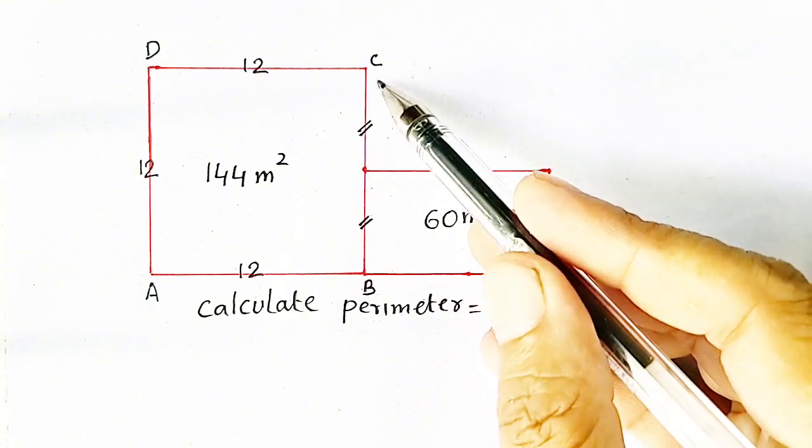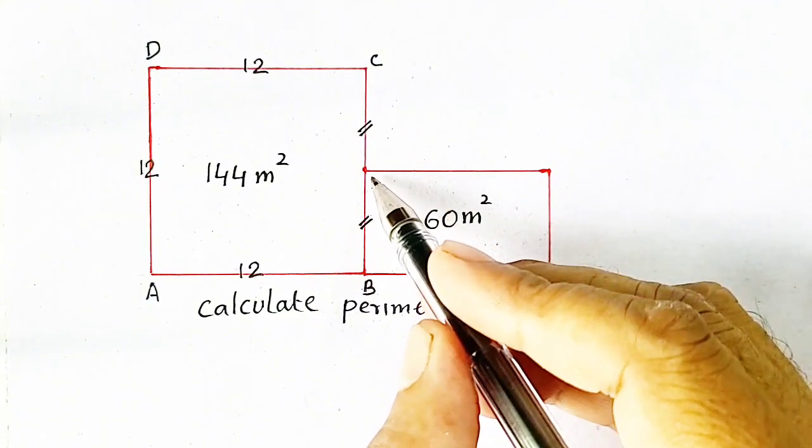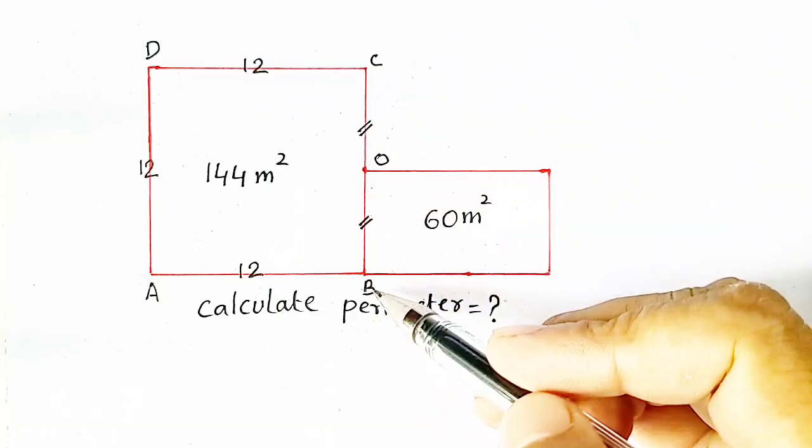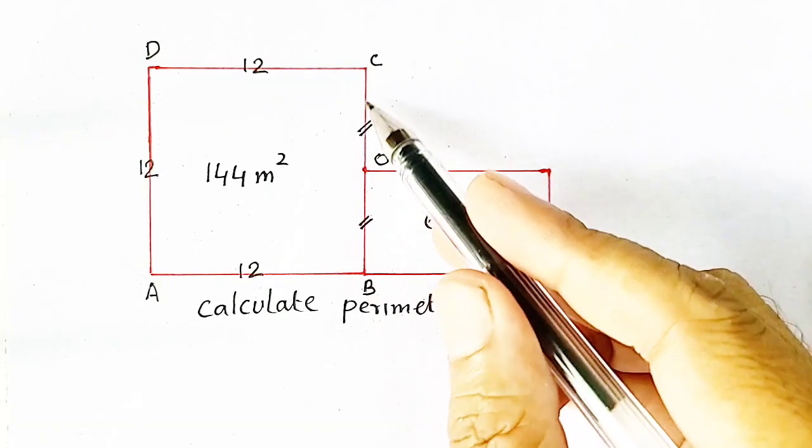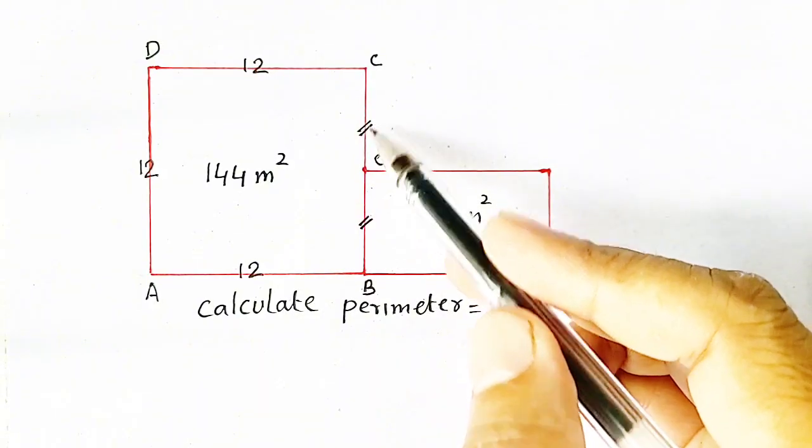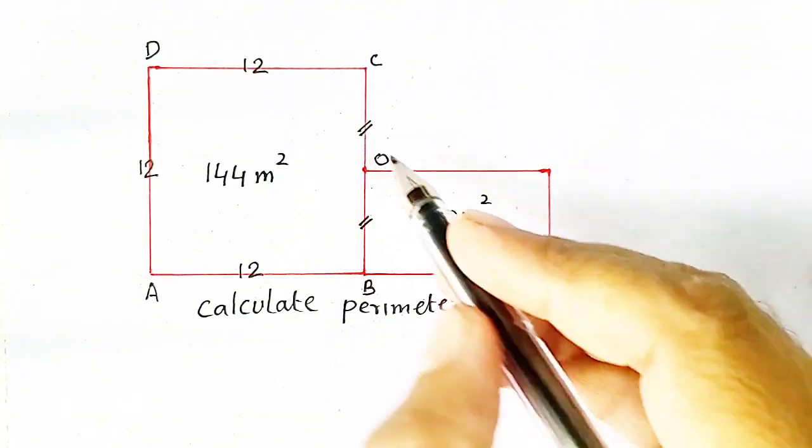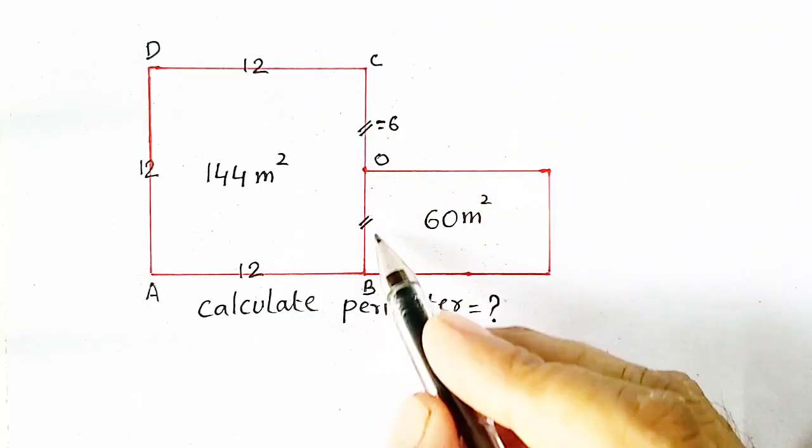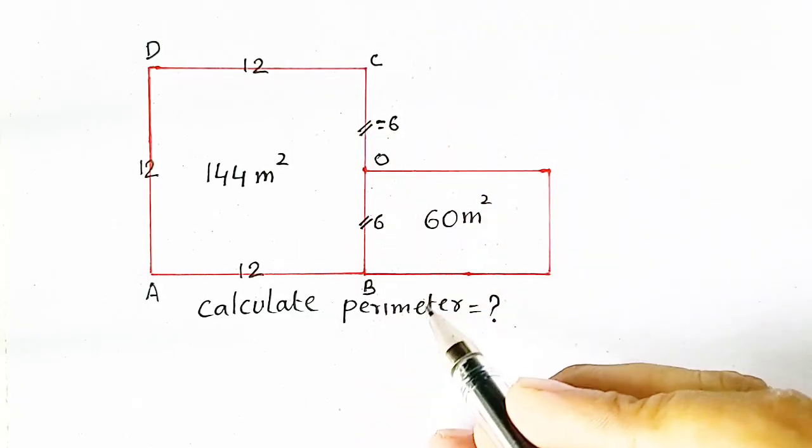But here, if we put O, so OC will be equal to OB. Means it is totally 12 and it is converted into two halves. So the above portion will be equal to 6, and this is also 6.